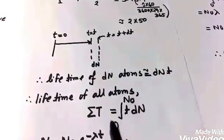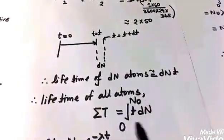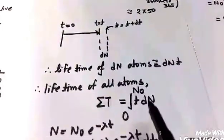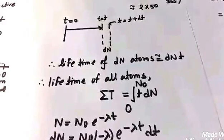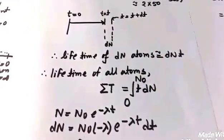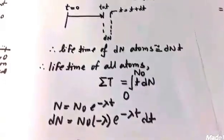From this formula, if we differentiate both sides we will get this line, and replacing dn by this, we will be having the total lifetime of all the atoms.